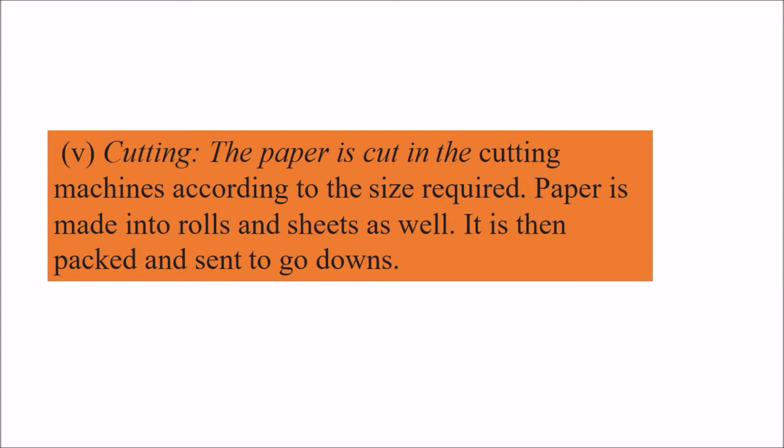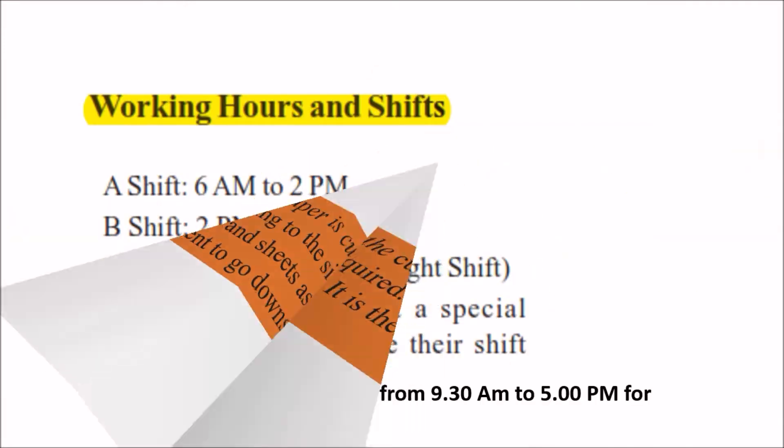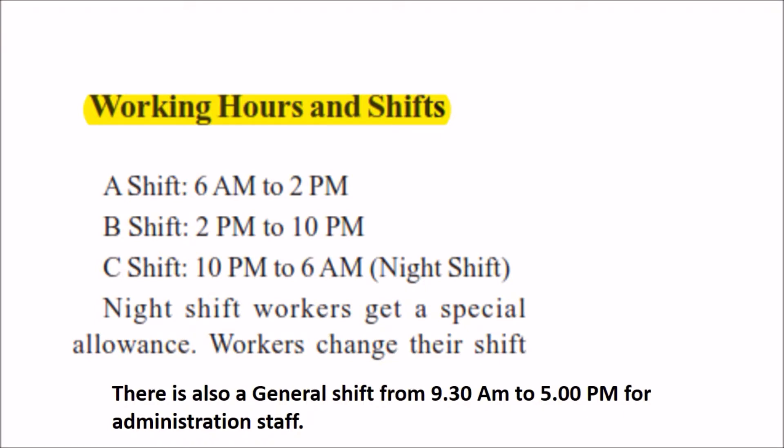Regarding working hours in the industry, there are three major shifts. Shift A is from 6 AM to 2 PM. Shift B is from 2 PM to 10 PM. Shift C, also called the night shift, is from 10 PM to 6 AM — workers on the night shift receive a special allowance or extra pay. There is also a general shift only for administrative staff, who mostly work from 9 AM to 5 PM.